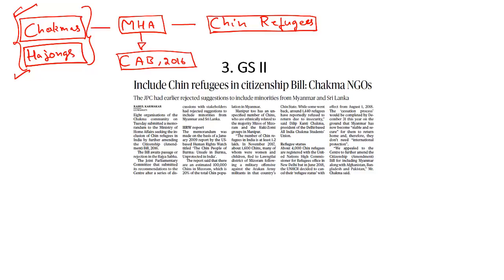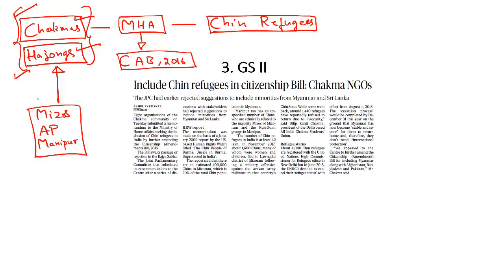Granting citizenship to Chakmas and Hajongs has been resisted by a number of ethnic groups in the Northeastern parts of India, such as the Mizos, the tribes of Arunachal Pradesh, and some tribes in Manipur. These native tribes feel that Chakmas and Hajongs are outsiders being given citizenship only on religious grounds. This is one of the reasons for massive protests in the Northeastern parts of India against the Citizenship Amendment Bill.